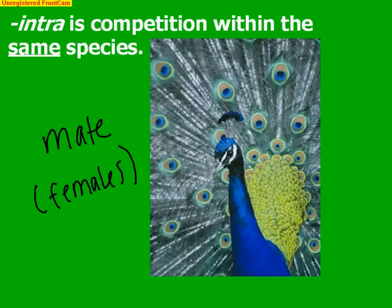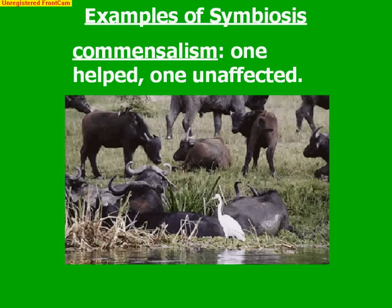Looking at specific types of relationships within a community, symbiosis is the general term we give to any close relationship. The first type is commensalism, a relationship where one organism is helped while the other is unaffected. For example, the buffalo and the cowbird: the cowbird benefits because the buffalo uncovers the hiding places of insects as it moves around, so the birds don't have to spend energy hunting for insects. The birds benefit, while the buffalo are completely unaffected — they're not helped or harmed. That's commensalism.